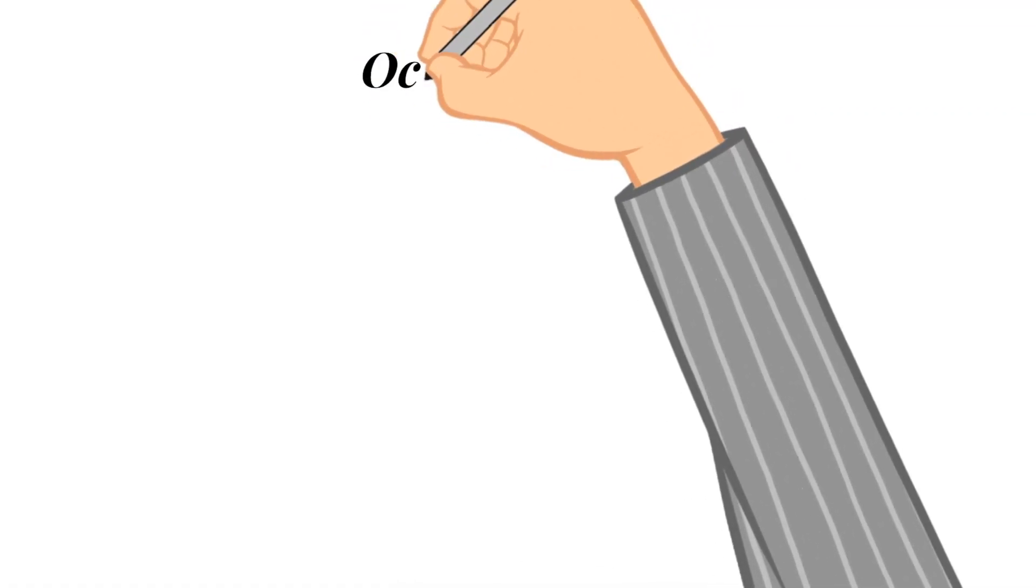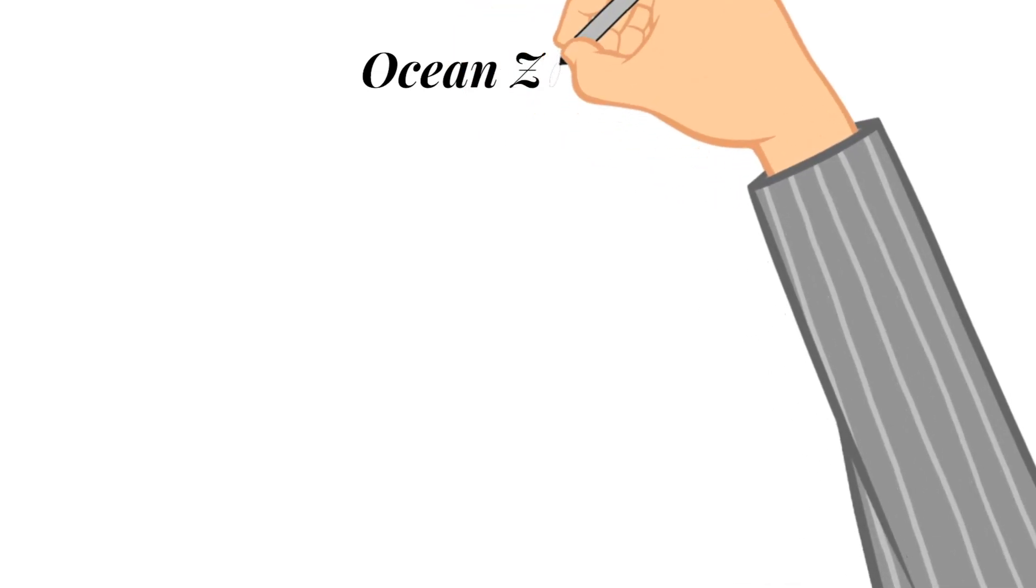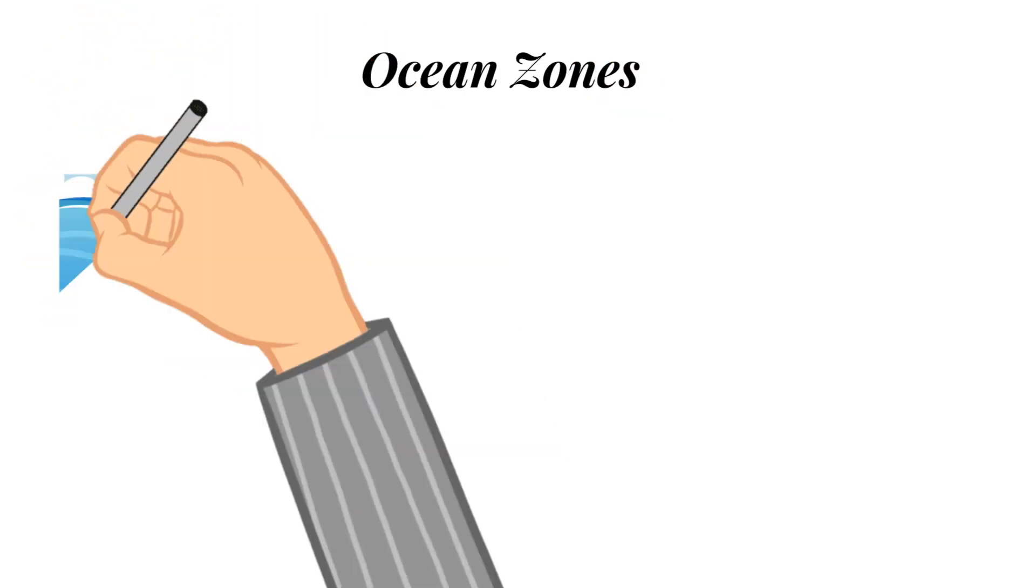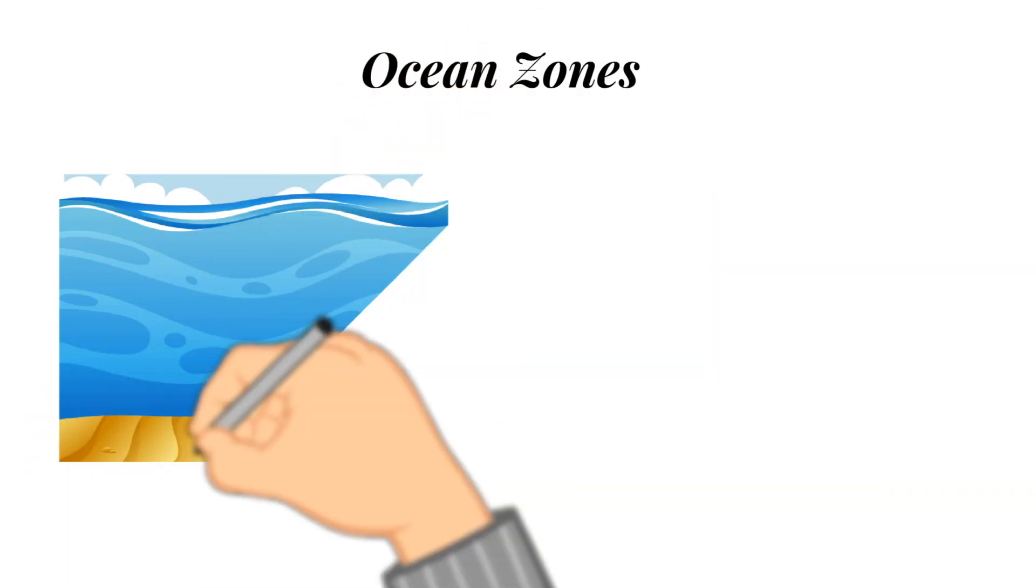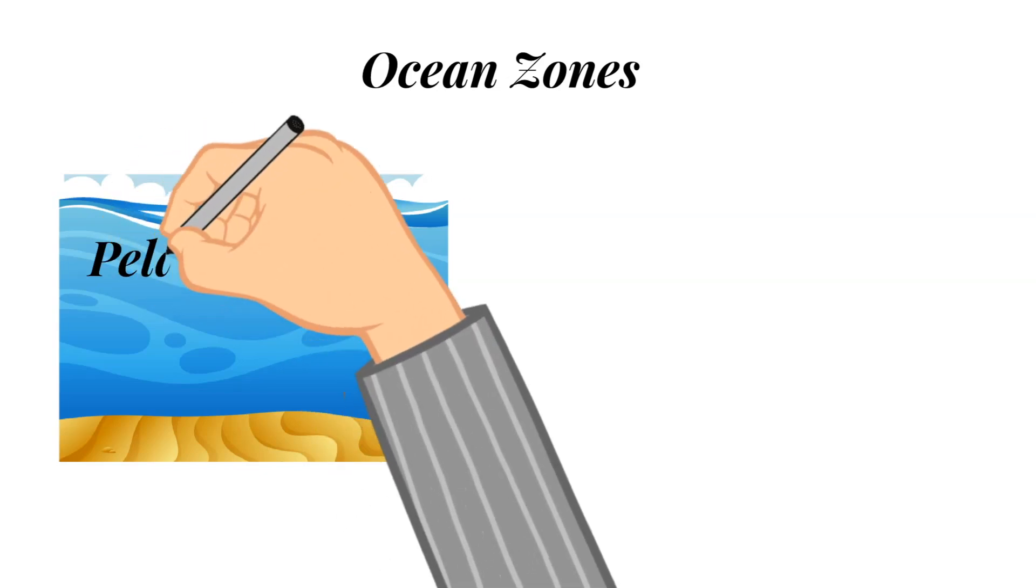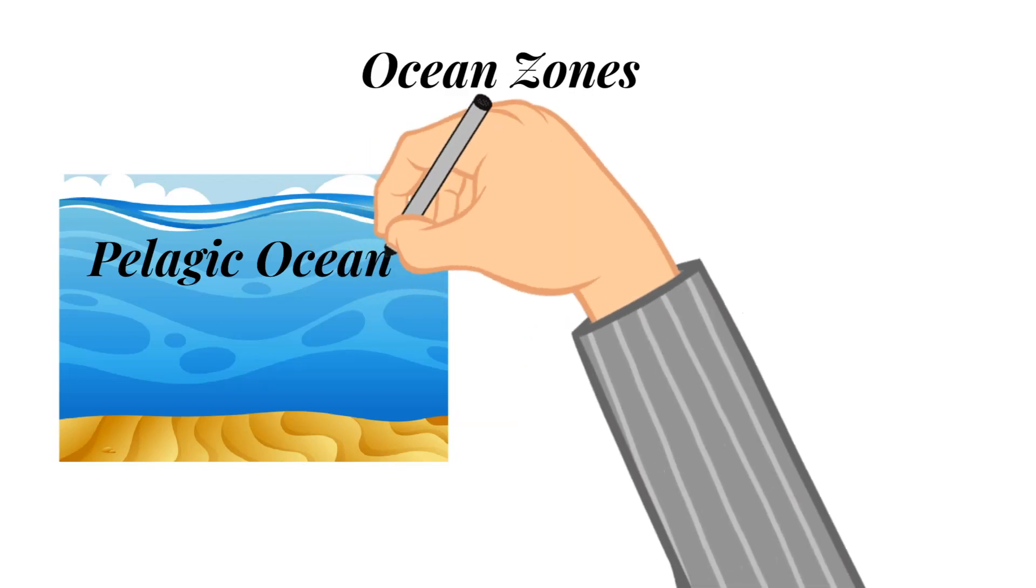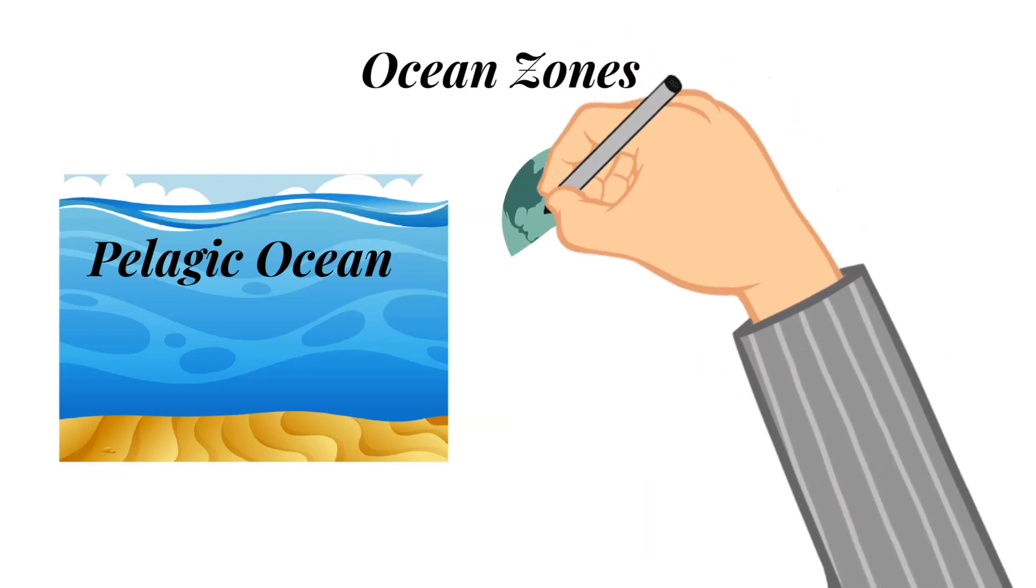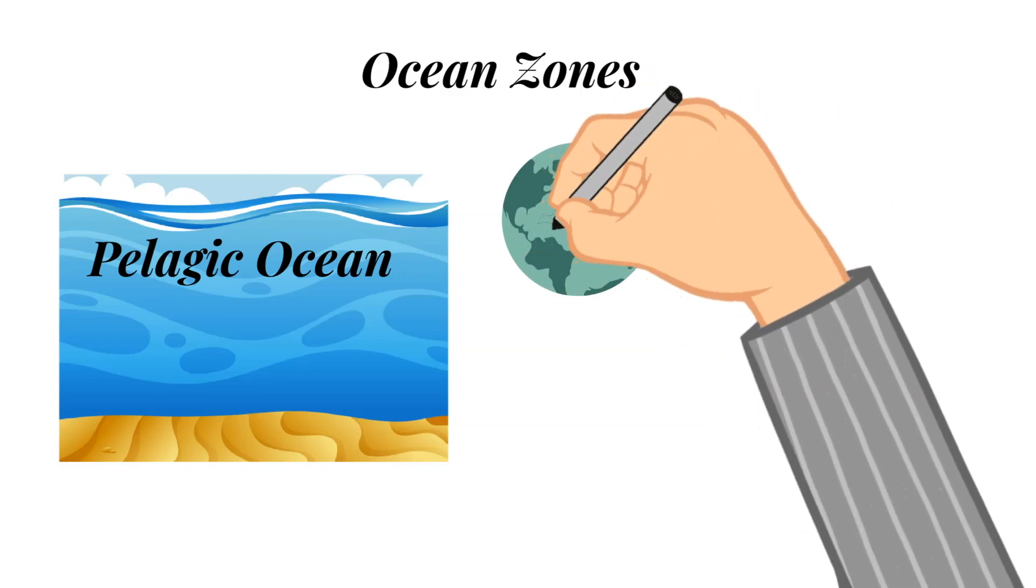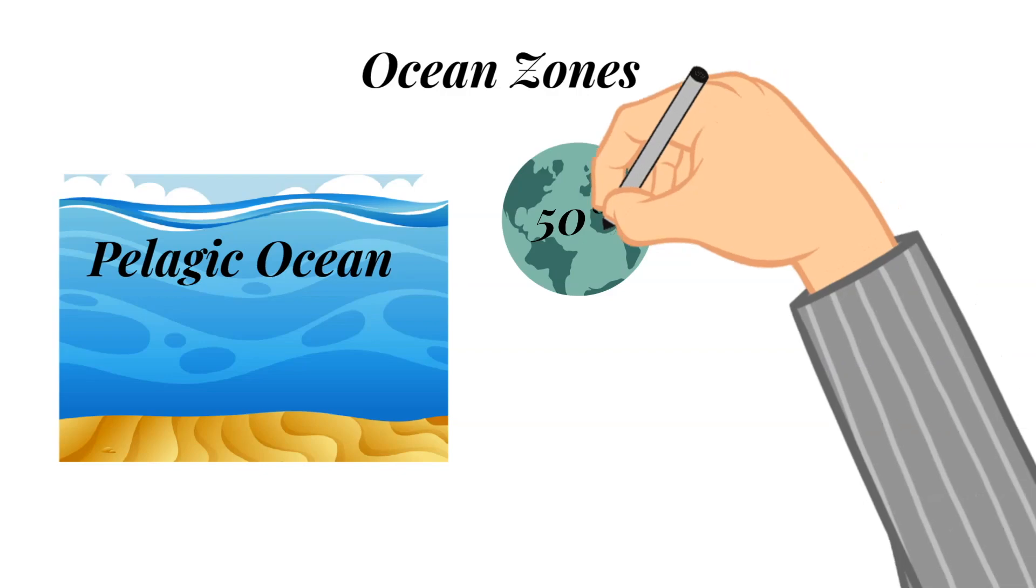This week, we are going to talk about the ocean zones, or we can say the different layers of water. So overall, the pelagic ocean is just the open ocean. And it's important to look and study about the open ocean because it actually comprises about 50% of the Earth's surface. And so this pelagic ocean part of the world is far away from any type of land. That's why it's considered the open ocean. And it has many different types of creatures in it.